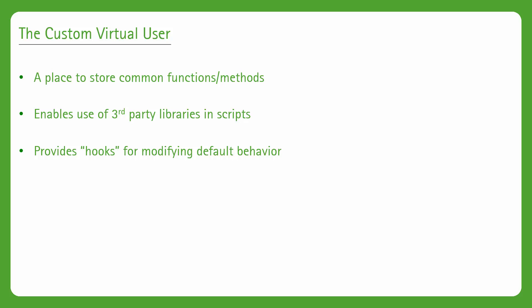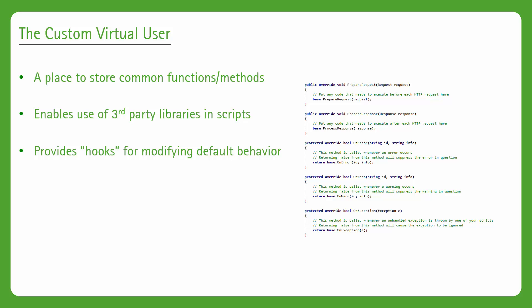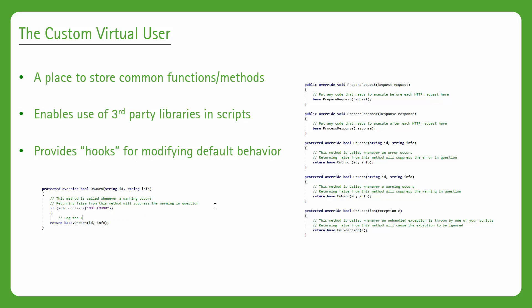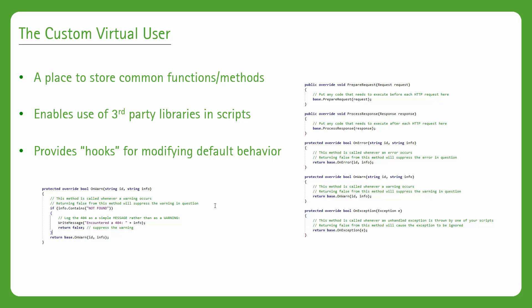The custom VU also adds hooks into various events that allow you to override the default behavior. For example, there are hooks into the process of raising errors or warnings, or dealing with requests and responses before they're actually processed — you can intercept these calls and change what should happen depending on various factors. For example, the normal course of action when you receive a 404 response is for a warning to be placed into the virtual user's event log. You may decide to ignore that warning, and so you would use the unwarn hook to ignore 404s.